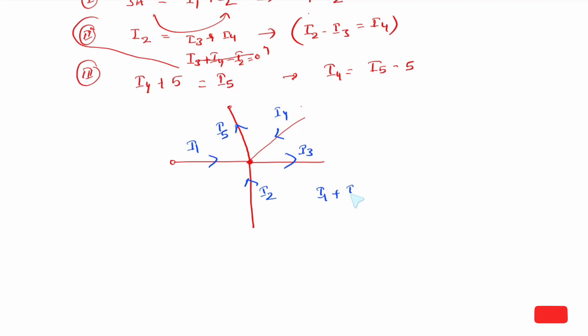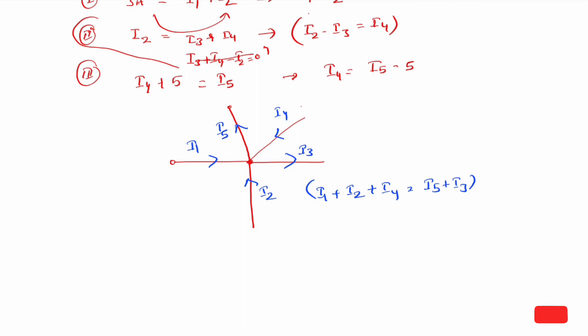At node 3: incoming current I1 plus I2 plus I4 is equal to outgoing current I5 plus I3. If you have any questions, search 'KCL' on YouTube. You can look up KCL as the law of conservation of charge.